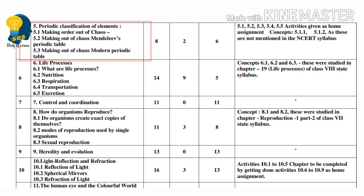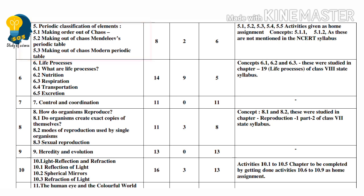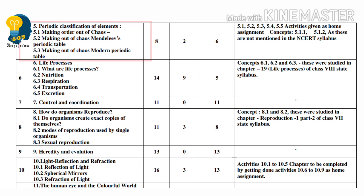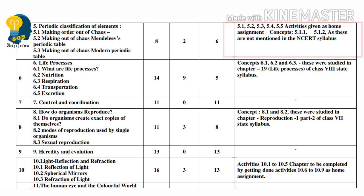Next, lesson 5 — Periodic Classification of Elements. Important topics: Making Order out of Chaos, Early Attempts at the Classification of Elements, Mendeleev's Periodic Table, and then Modern Periodic Table. From 7th standard, this lesson you can skip. But the activity-based concepts — 5.1, 5.2, 5.3, 5.4, and 5.5 — open your textbook and mark these. This concept is your assignment.